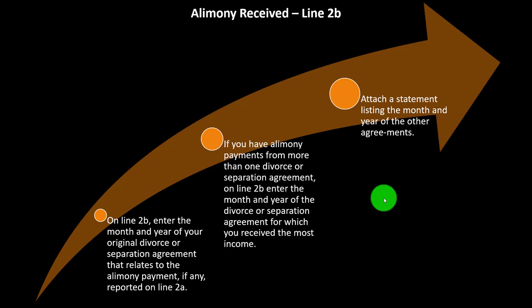They want that date so they can get an idea of the law that should be applied. If you have alimony from more than one divorce or separation agreement, on Line 2b enter the month and year of the agreement for which you received the most income, and attach a statement listing the month and year of the other agreements. If you have a whole lot of different alimony agreements compiled over a time frame, you may need a separate attachment to the tax return to list more information for the IRS.